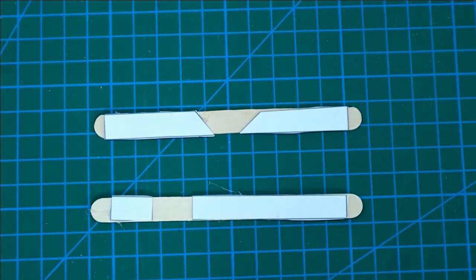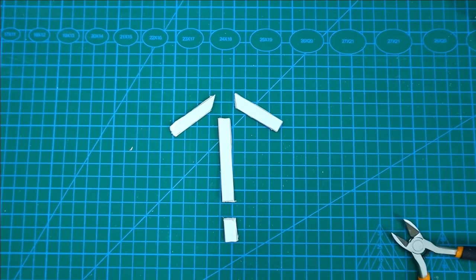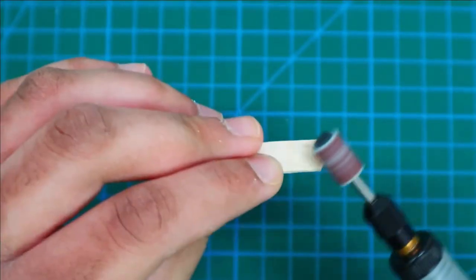Stick it on ice cream sticks and cut them out. Then comes the sanding part.